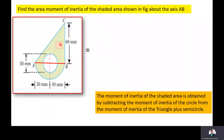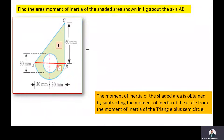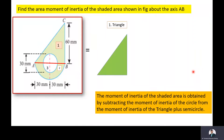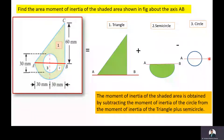ABC is the triangle — that is the first part. The semicircle below AB is the second part, and the circle is the third part. The moment of inertia of the circle is to be subtracted from the summation of the moment of inertia of the triangle and the semicircle. That is, we add the moment of inertia of the triangle and semicircle, then subtract the moment of inertia of the circle about the axis AB.